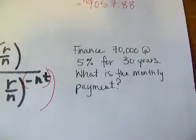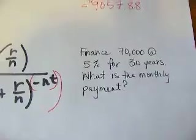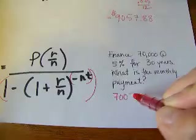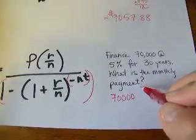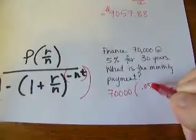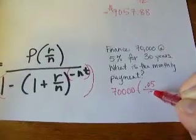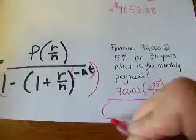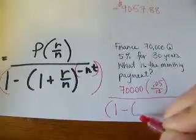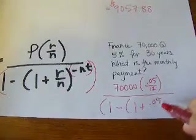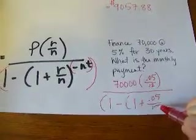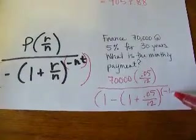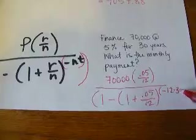You finance $70,000 at 5% for 30 years. What is the monthly payment? Alright, so $70,000 is our amount financed. 5% is the rate making monthly payments. Alright, and then on the bottom, got that rate of 5% over 12 and that exponent is the negative 12 times 30.